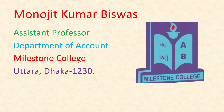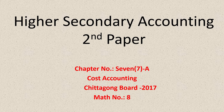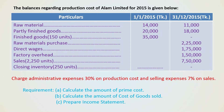Welcome back to this video lecture. Today I want to solve a very important math from chapter number 7A, that is cost accounting — Chittagong 2017, math number 8. At first we want to see the problem. The problem is the balances regarding production cost of Alum Limited for 2015 is given below.